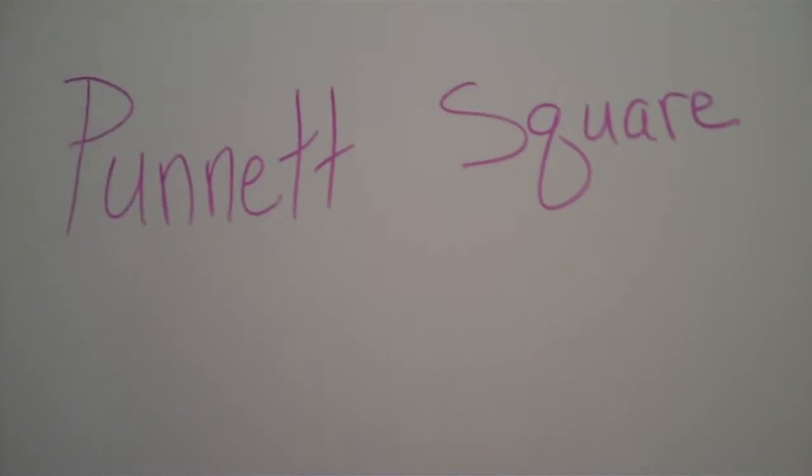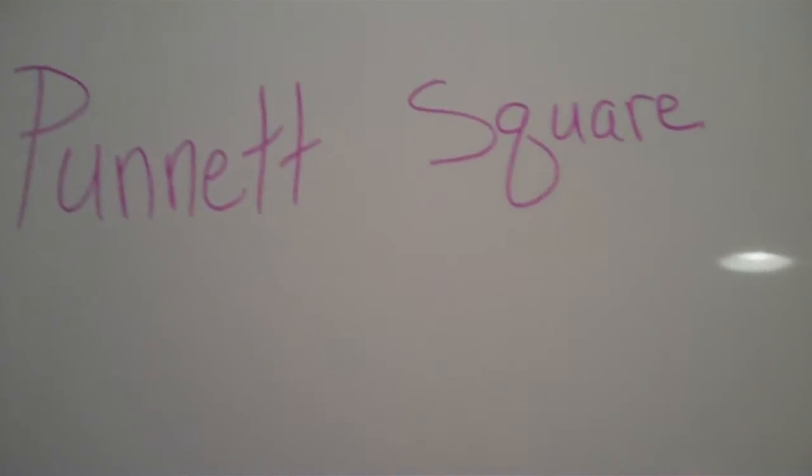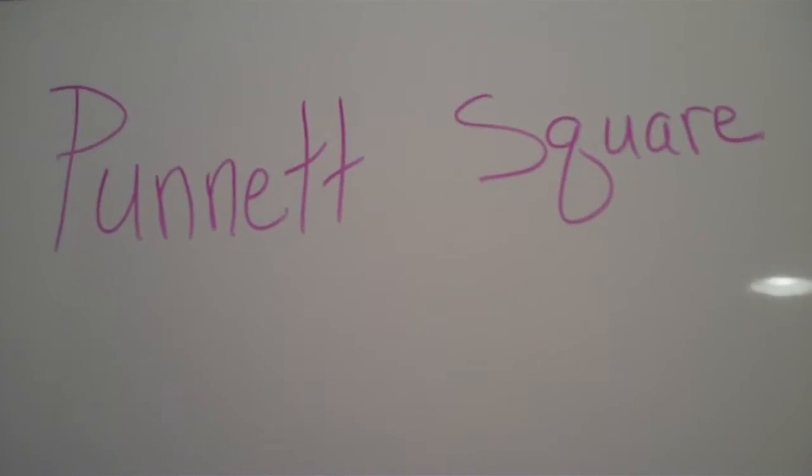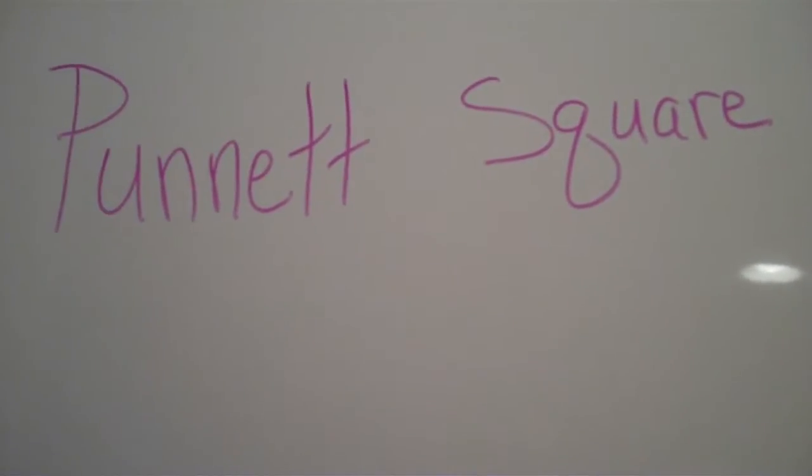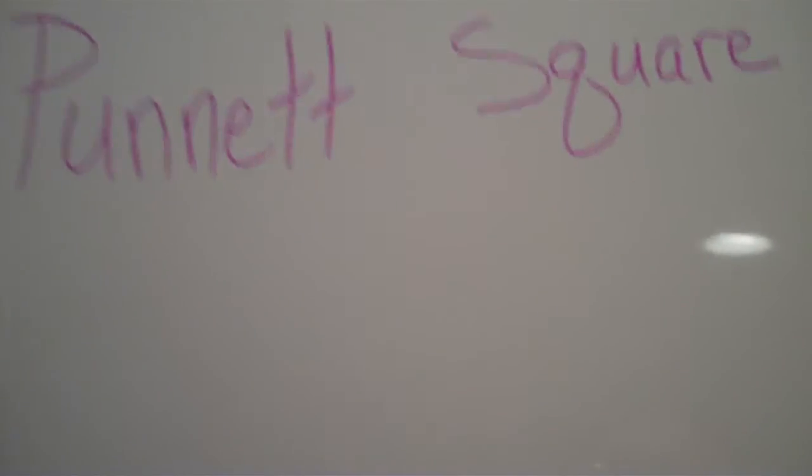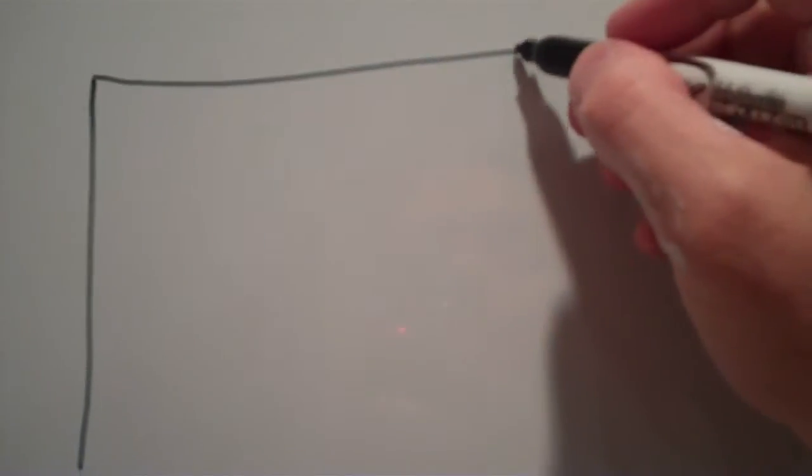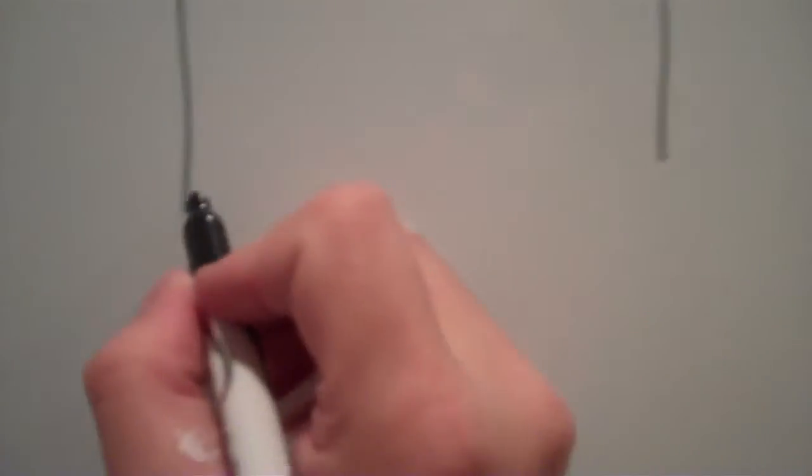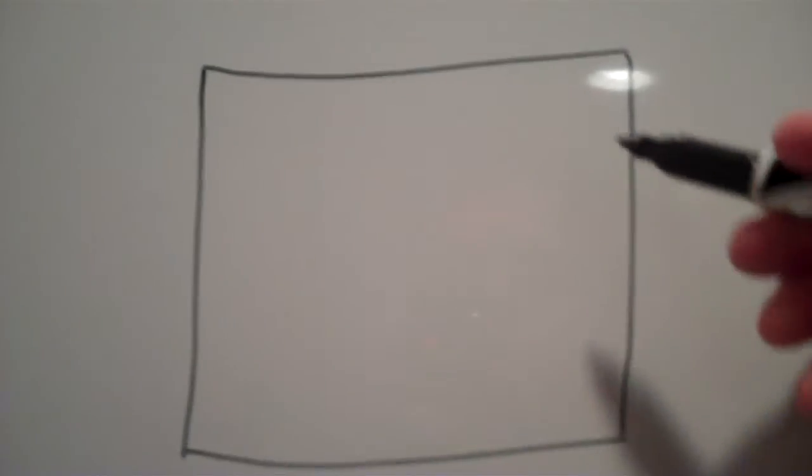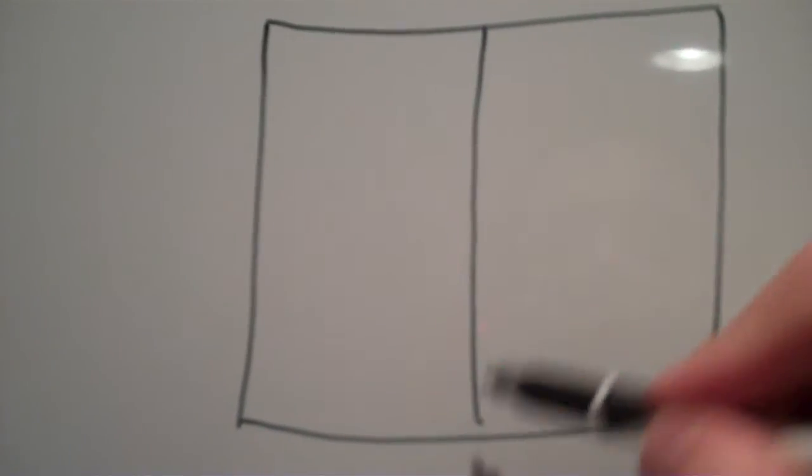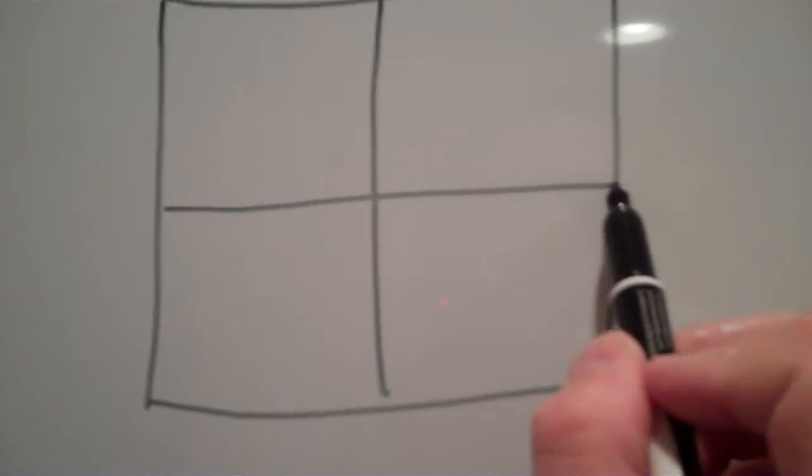I want to show you how to set one up and how to explore the genetic variations that you may have questions about. What it is, it's a simple square like such. You're going to cut it into four parts and I'll show you why.